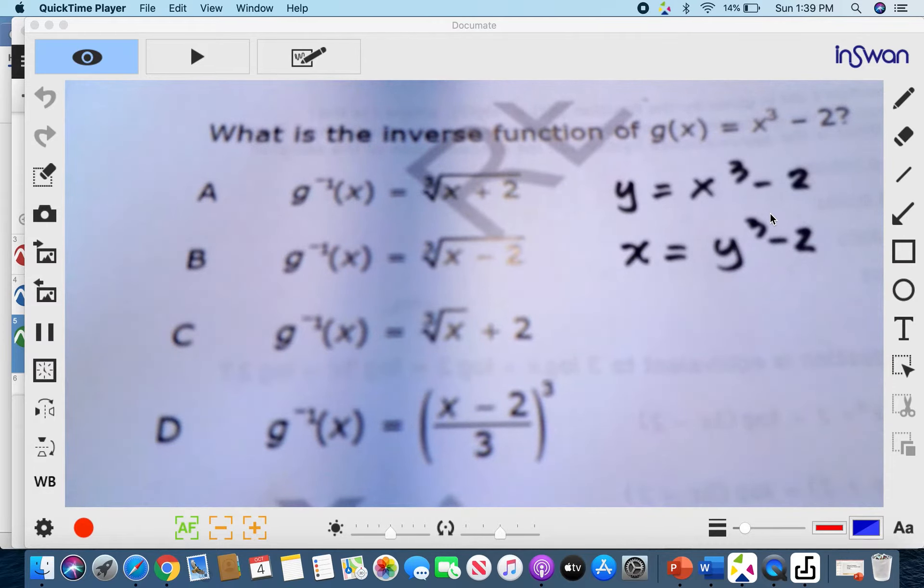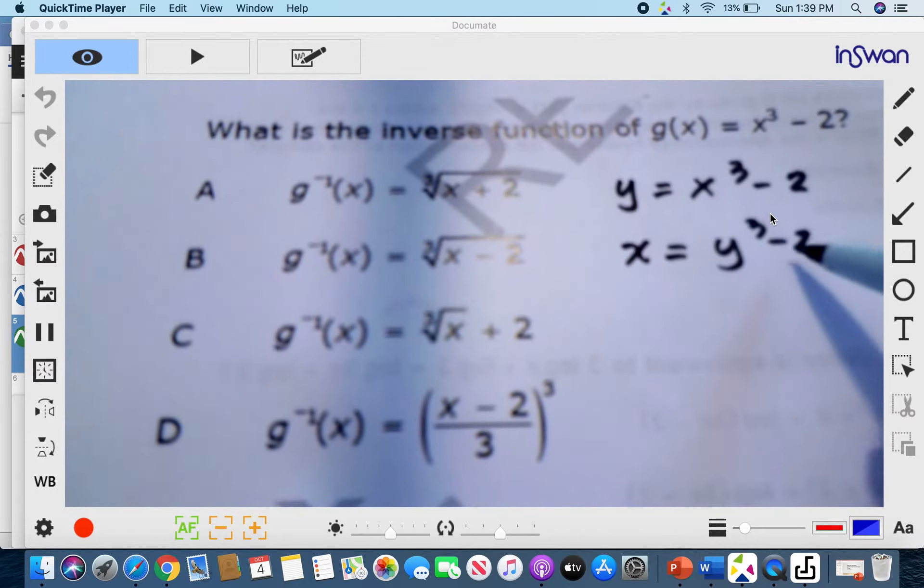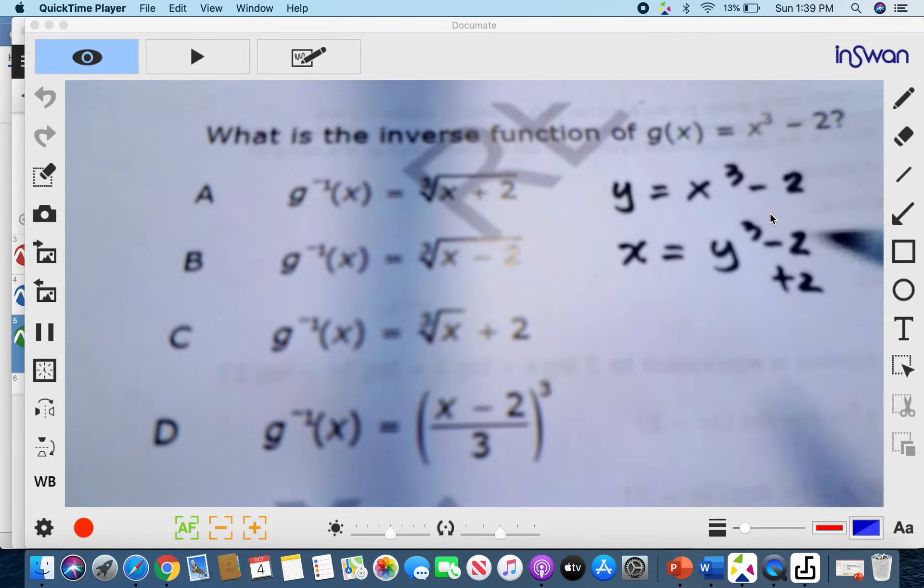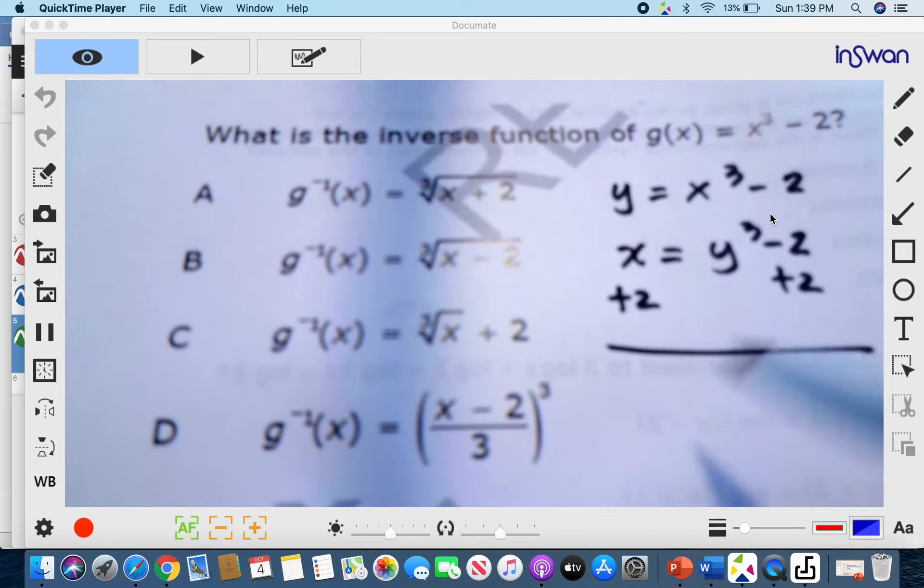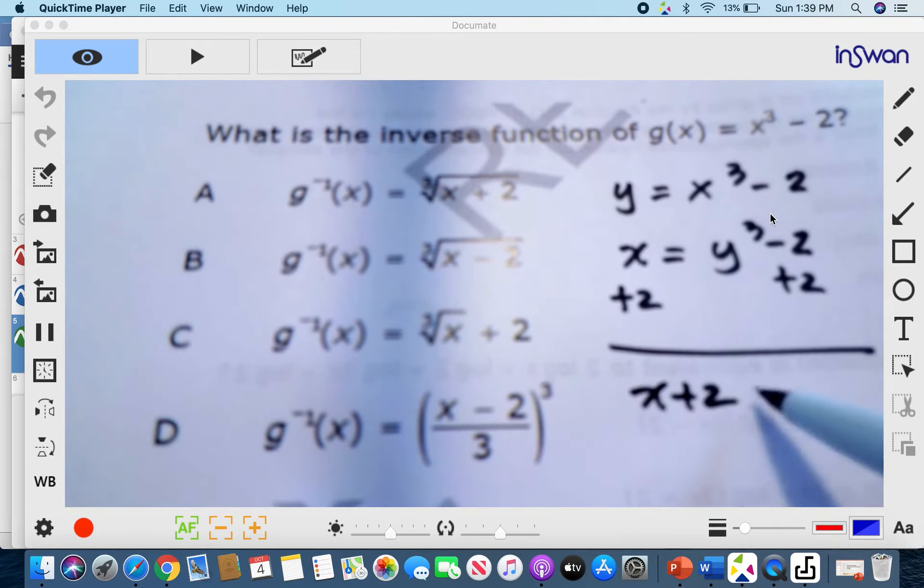Now if you have an exponent, you need to raise that exponent to the reciprocal. So first we can add 2 here and eliminate 2. So add 2, and you have x plus 2 equals y cubed.